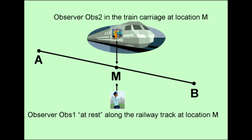Einstein considered an observer OBS-1 at rest while being positioned next to a train track at a location indicated by M. M is the midpoint between locations A and B on the train track. The train is traveling in the direction of B at a constant velocity. An observer OBS-2 is a passenger on the train and is passing M precisely at the time instance T1.